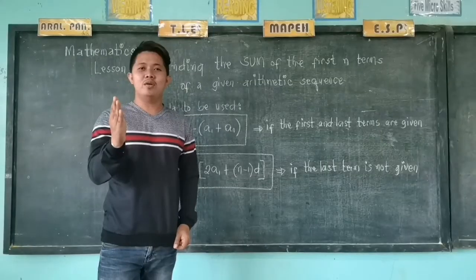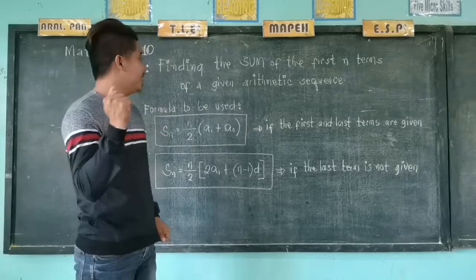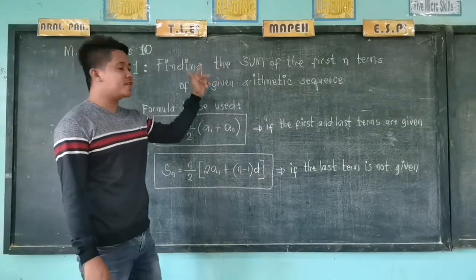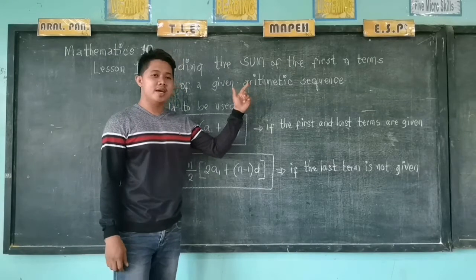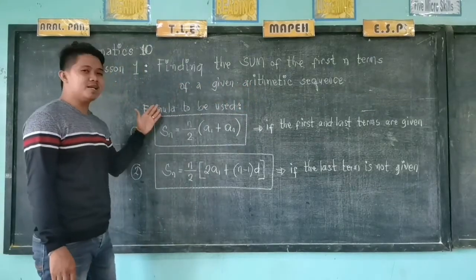We are now on Module 4 Lesson 1, finding the sum of the first n terms of a given arithmetic sequence. So we have two formulas to use.